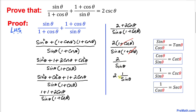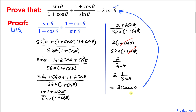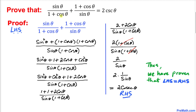Now 2 over sine theta can be written as 2 times 1 over sine theta. Since 1 over sine theta is the same as cosecant theta, we can write this as 2 times cosecant theta — which is exactly our right-hand side. Thus we have proven that the left-hand side is indeed equal to the right-hand side. Thanks for watching and please don't forget to subscribe for more exciting videos.